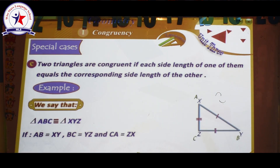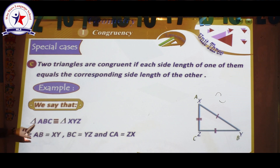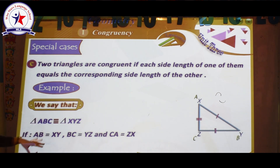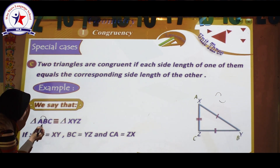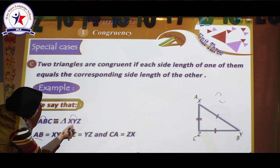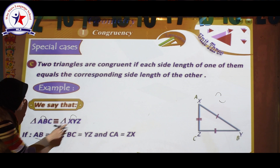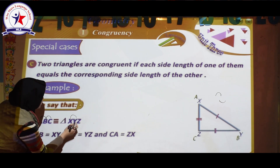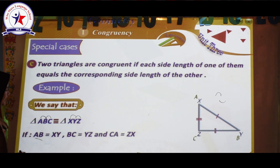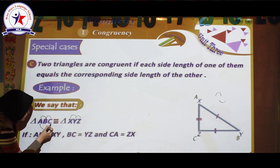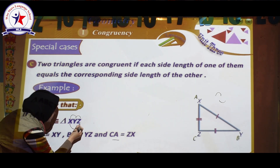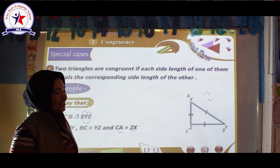Two triangles are congruent if each side length of one of them equals the corresponding side length of the other. We say triangle ABC is congruent to triangle XYZ if AB equals XY, BC equals YZ, and AC equals XZ. Thank you, guys — hope to see you again.